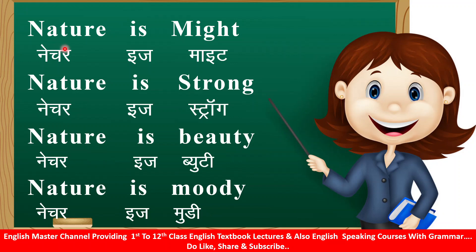Now I will give you an explanation of nature. Nature is our purpose. Nature is might — our nature is very powerful. Nature is strong — it is very strong. Nature is beauty — our nature is very beautiful. Nature is moody — there are many different kinds of shades. Now let's read the stanza: Nature is might, nature is strong, nature is beauty, nature is moody.